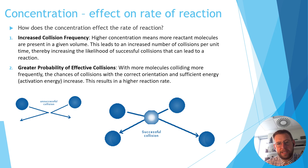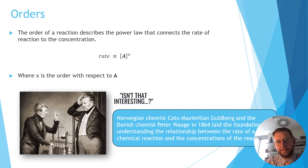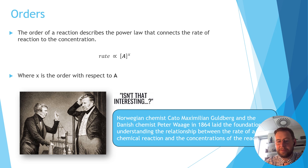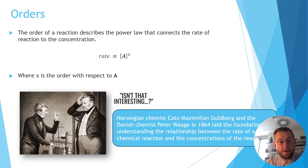But what is the mathematical relationship between the concentration and the rate of reaction? Well, we can express that mathematical relationship with this. This is a rate equation, and it was first considered and first written down by chemists Cato Maximilien Guldberg and Peter Waage in 1864.